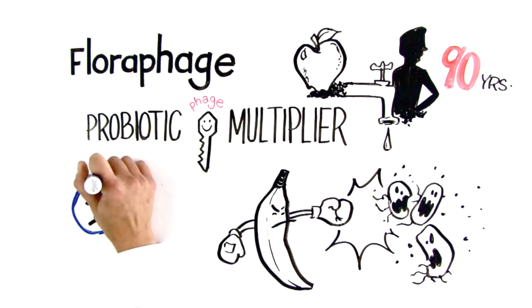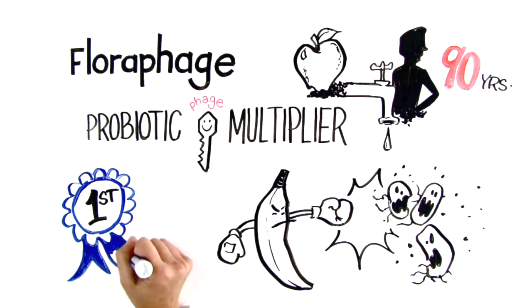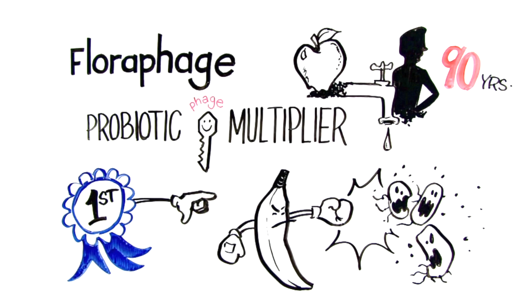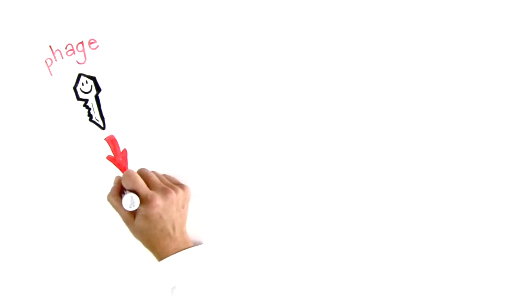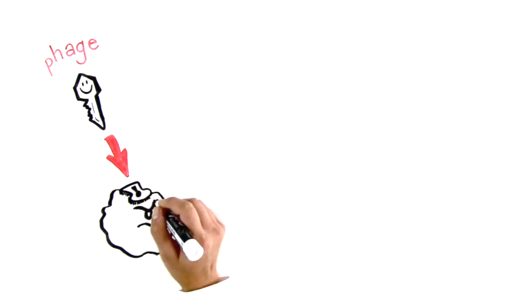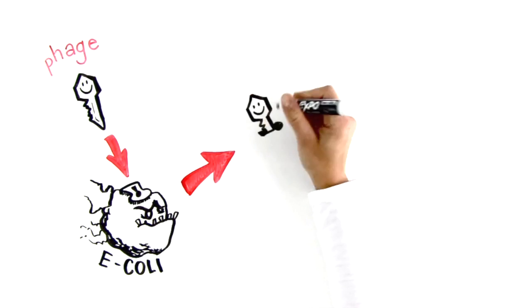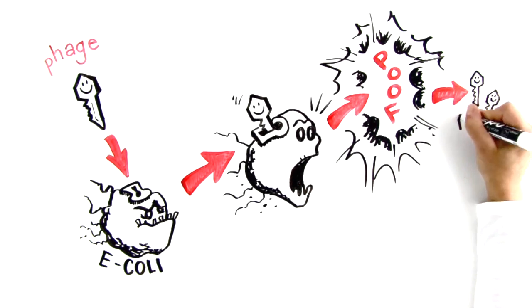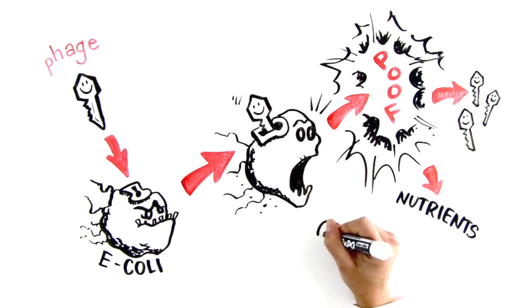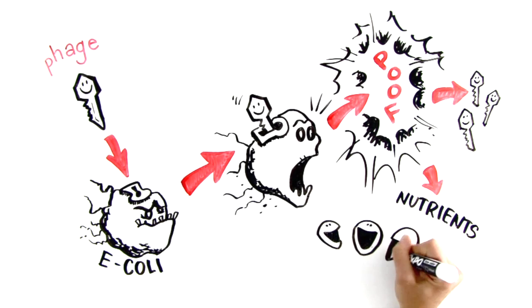But Floraphage is the first dietary supplement formula to utilize these amazing microscopic proteins. Floraphage is selectively antimicrobial, specifically attaching to harmful bacteria. These bad bacteria essentially burst open, releasing more phage and nutrients for good bacteria to feed on, known as prebiotics.